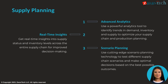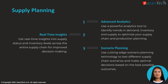For supply planning, IBP provides advanced analytics to identify demand, inventory, and supply trends. This optimizes supply chain and production planning. You get real-time insights into inventory and supply status across the supply chain for improved decision-making. Cutting-edge scenario planning allows you to test different scenarios to make the best supply chain decisions based on optimal outcomes.